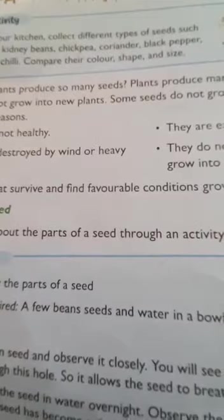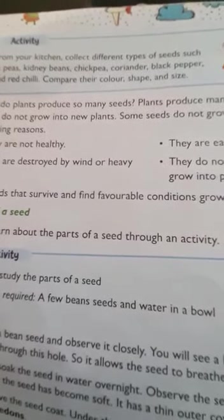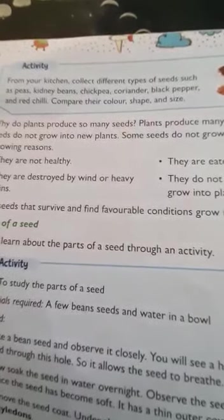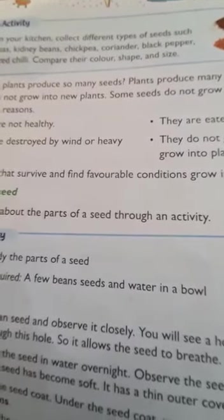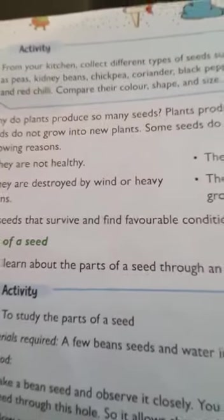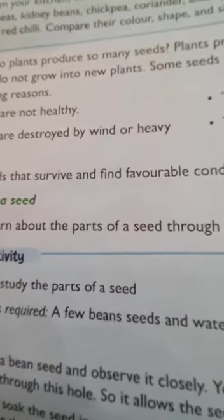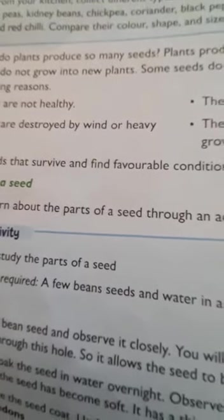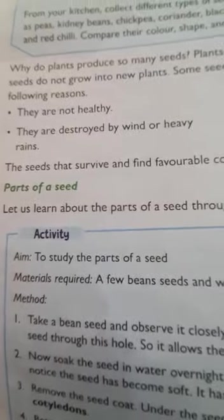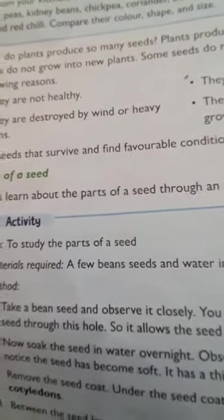Now we will see why plants produce so many seeds. In some fruits there is only one seed, in some there are three or four, and in some fruits like pomegranate there are multiple seeds. Plants produce many seeds because not all seeds grow into new plants — only seeds in favorable conditions can grow into a new plant.